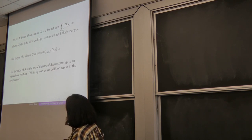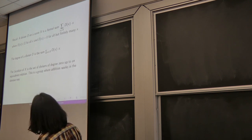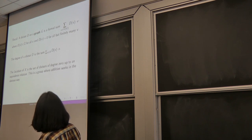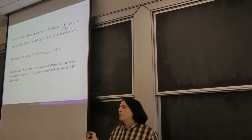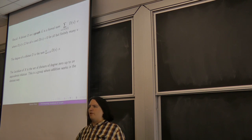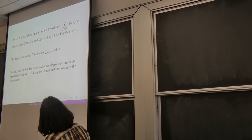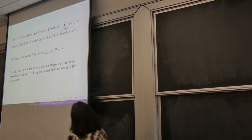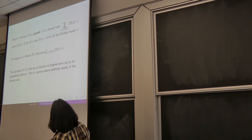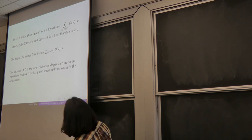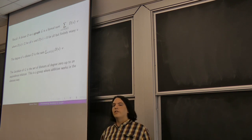To define the Jacobian of a graph, we do essentially the same thing. Instead of a divisor on a curve, we define a divisor on a graph: a formal sum over all the vertices, where for each vertex we assign an integer. I'll always assume the graph is finite, so it has a finite number of vertices. The degree of the divisor is the sum of that integer over every vertex. The Jacobian of the graph is the set of divisors of degree zero, up to an equivalence relation.